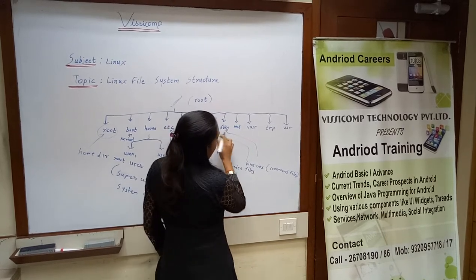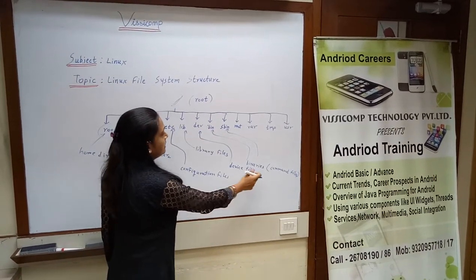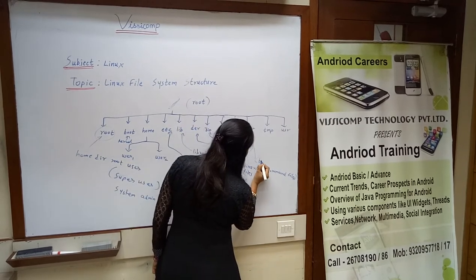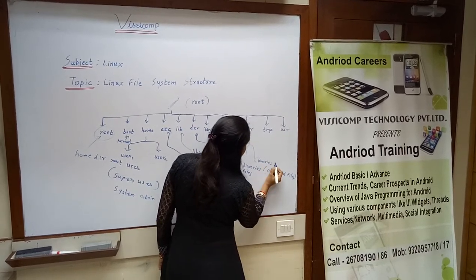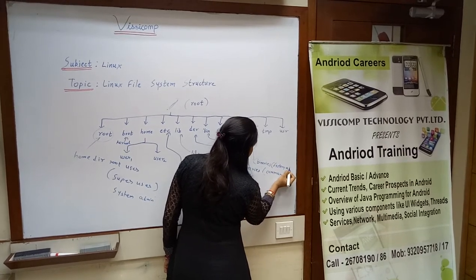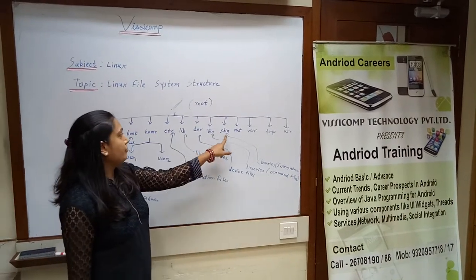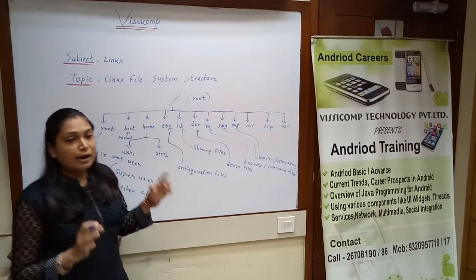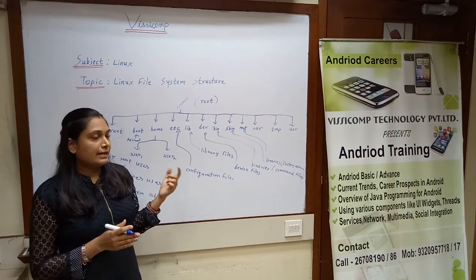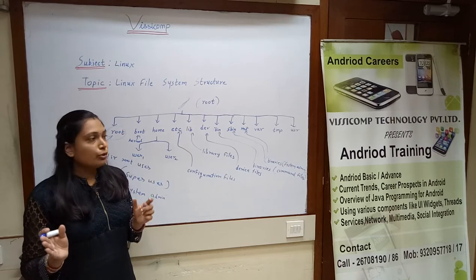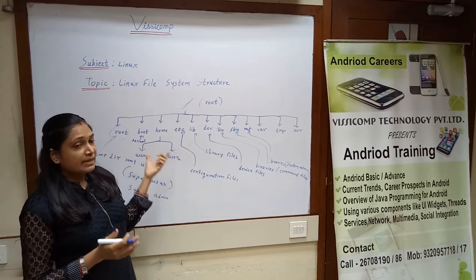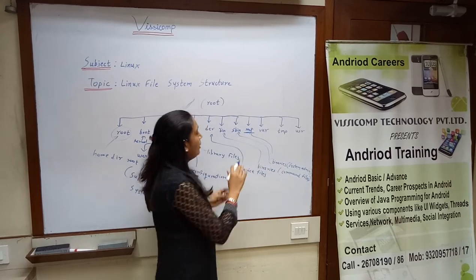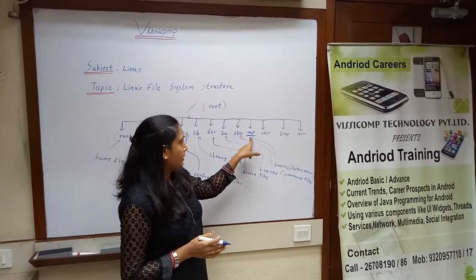Then sbin. In bin, all binary files and command files are there that normal users can also use. In sbin, the binaries are those which the system administrator can use. Then mnt — mnt is the mount point for USB drives. For example, if there is a CD-ROM or pen drive and you want its content in Linux, you first copy it here, and from this folder you can access that content.